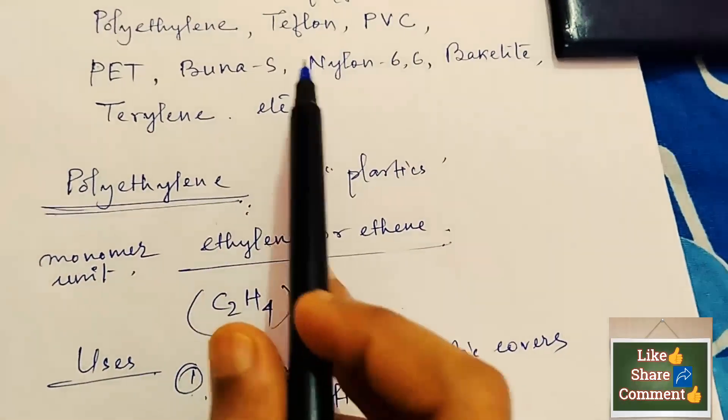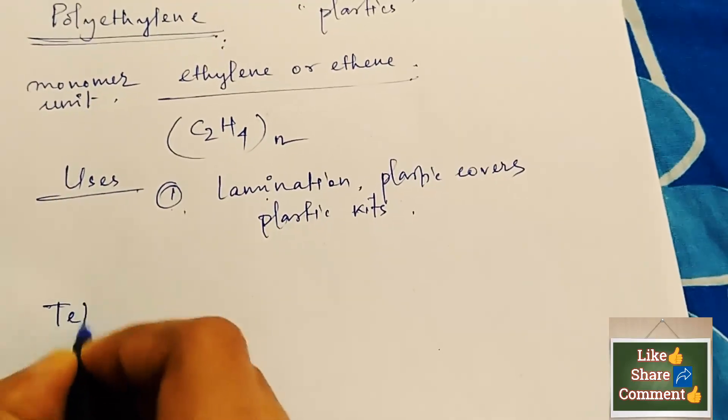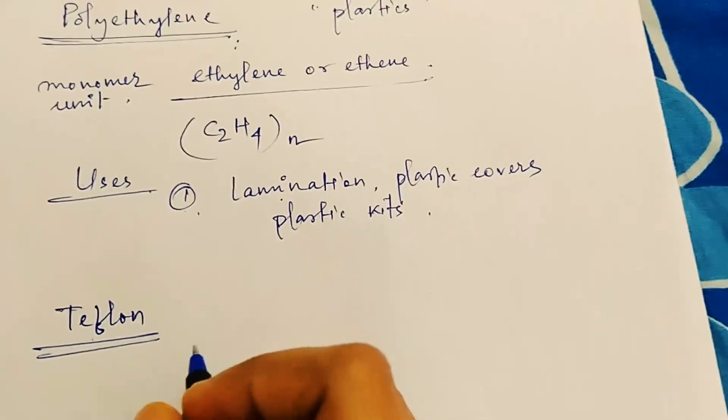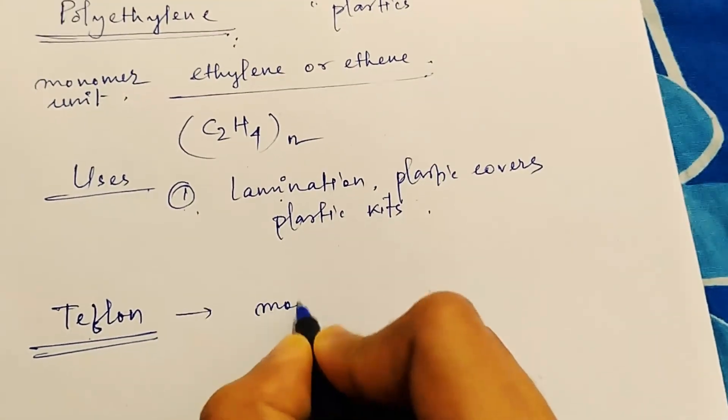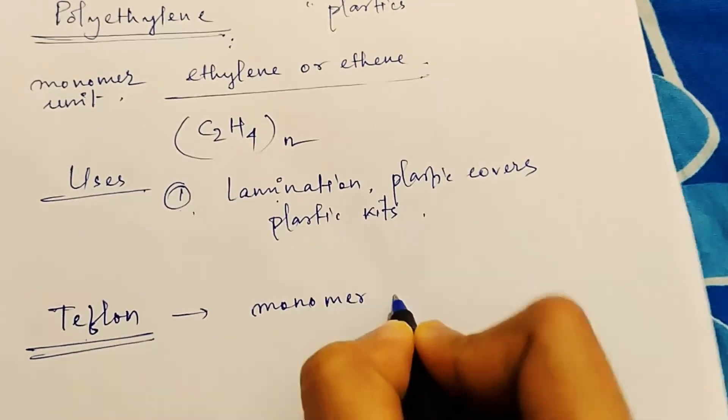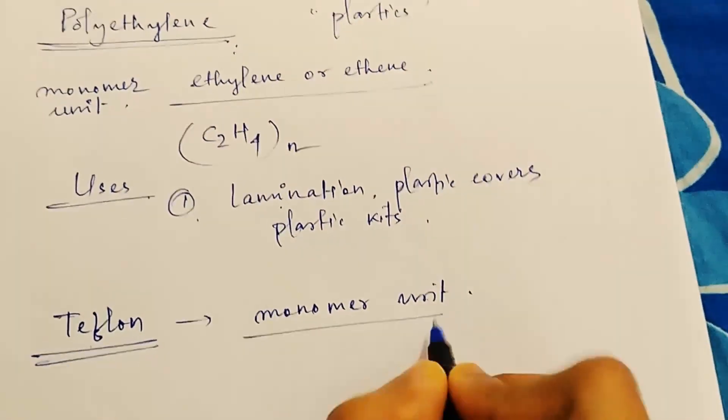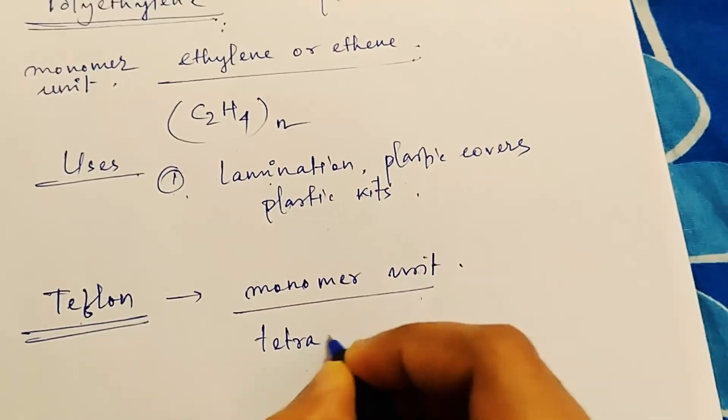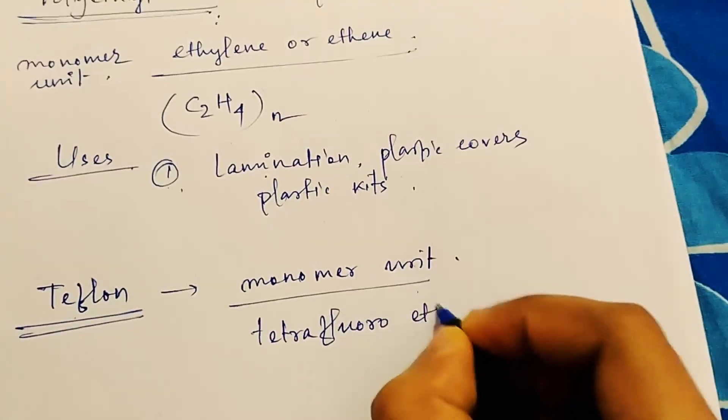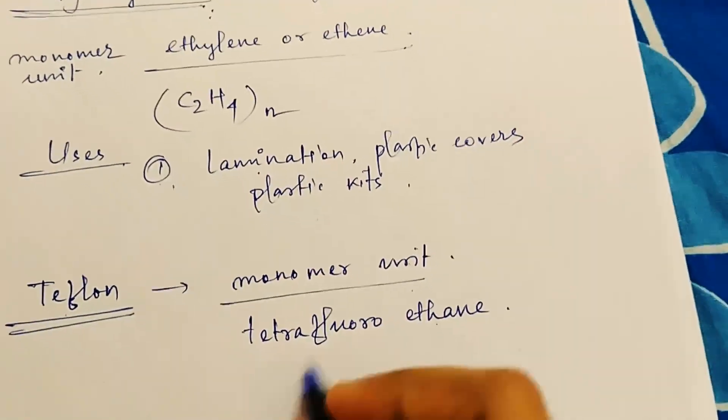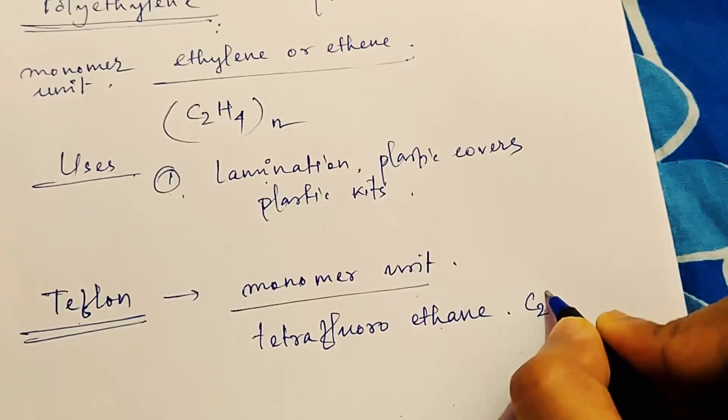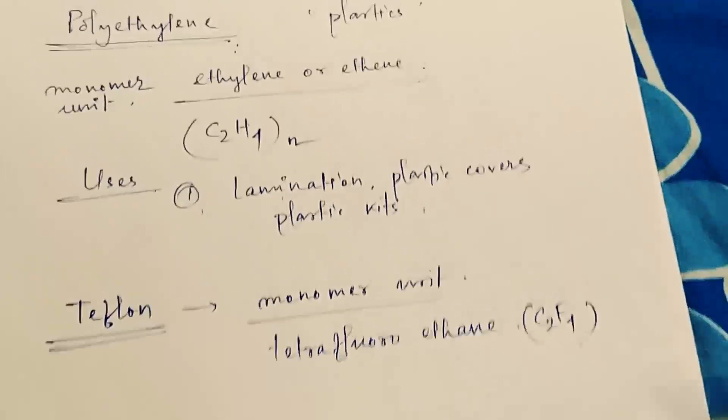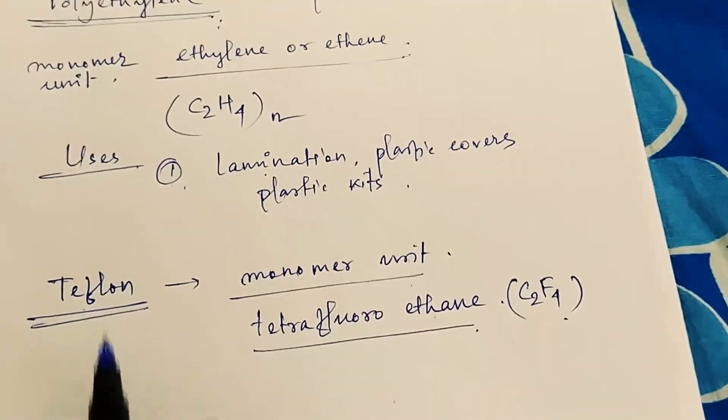Now next see teflon. Teflon is also a synthetic polymer where the monomer unit is, can you guess what it is? Tetrafluoroethylene. What is the chemical formula? The formula of tetrafluoroethylene is C2F4, so this is the monomer unit of teflon.